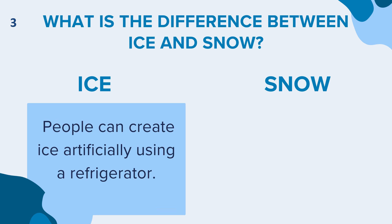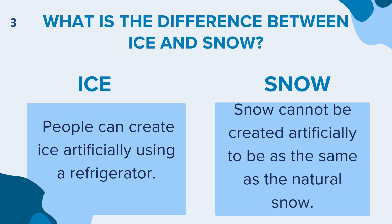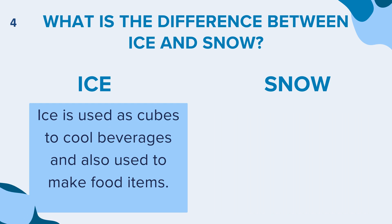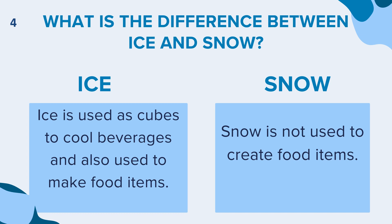Third difference: people can create ice artificially using a refrigerator, whereas snow cannot be created artificially to be the same as natural snow. Fourth difference: ice is used as cubes to cool beverages and also used to make food items such as popsicles. Ice is commonly used for preserving food, cooling drinks, and in recreational activities such as ice skating and hockey. Snow is not used to create food items; it is commonly associated with winter sports and activities such as skiing, snowboarding and building snowmen.